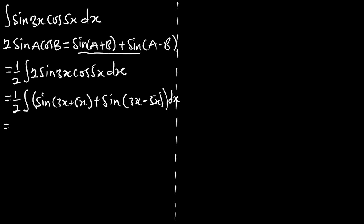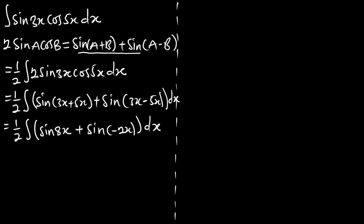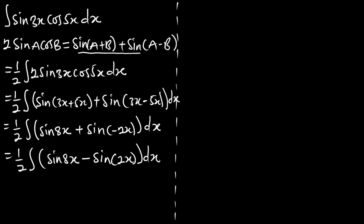We can simplify: this is one half times the integral of sin(8x) + sin(-2x) dx. The negative angle can come out, making it sin(8x) minus sin(2x). This is the same as one half times the integral of sin(8x) dx minus one half times the integral of sin(2x) dx.